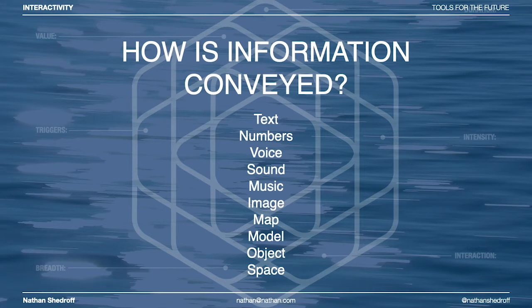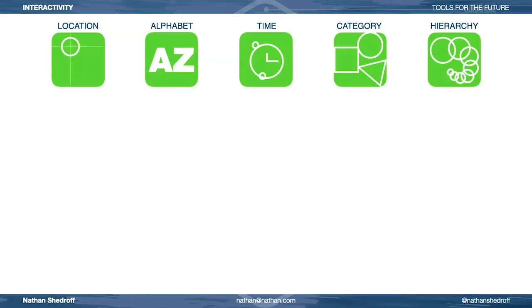Data and information can be communicated in many different ways, all of which we have some experience with ourselves. But there are only so many ways to organize data and turn it into information. Richard Saul Wurman, one of my mentors, always said that there were five ways to organize things — he called them his hat racks. He also developed the term LATCH, L-A-T-C-H, to stand for these five ways.